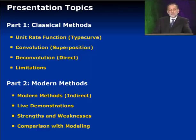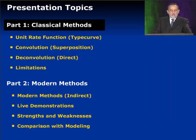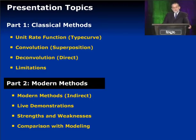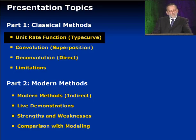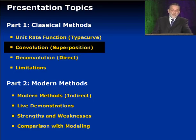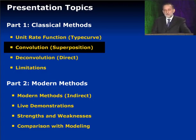So this talk is going to consist of two parts. We're going to talk about the classical methods of deconvolution and then the modern methods. But before we talk about deconvolution, we must first define the unit rate function, which we call the type curve, and its associated curve, the derivative. We must understand that so that we can carry on. Another name for convolution is superposition — I'll use them interchangeably. They are the same thing.